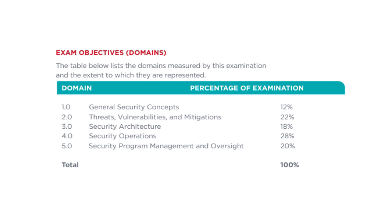Thanks for watching. I hope you found this information helpful as you prepare for your CompTIA Security+ exam. Remember, the passing score for the Security+ exam is 750 on a scale of 100 to 900, so keep that in mind as you study! If you have any questions, comments, or tips of your own, feel free to leave them in the comments section below. Don't forget to like this video, subscribe to the channel, and hit the notification bell so you don't miss any future updates. Good luck on your exam, and see you next time.